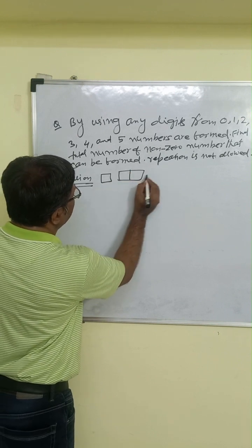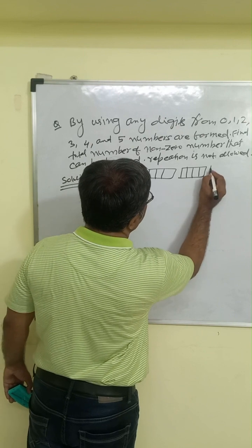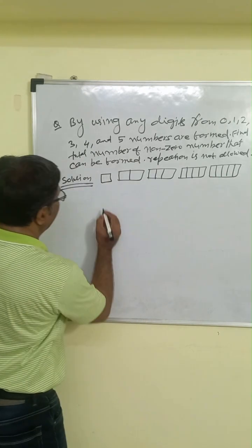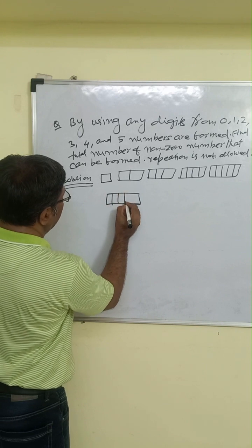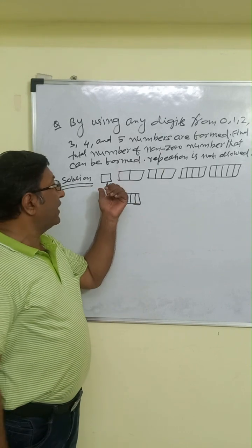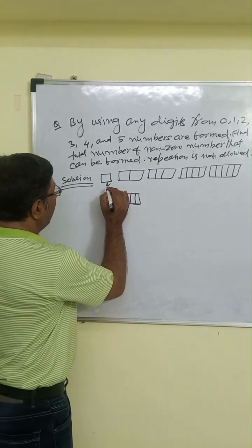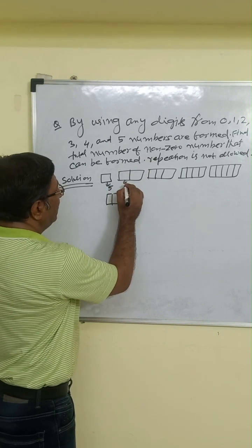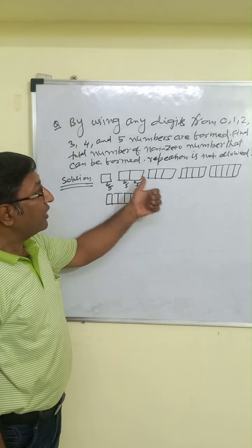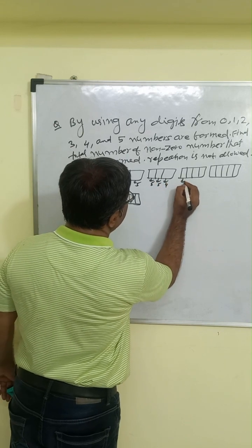For a one-digit number, we cannot use zero since we need non-zero numbers, so there are 5 choices. For two-digit numbers: the first position has 5 choices (no zero), and the second position also has 5 choices (including zero but excluding what was used). For three-digit numbers: 5 ways, 5 ways, and 4 ways.